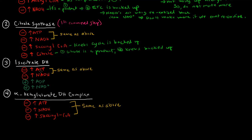Isocitrate dehydrogenase is also inhibited by high levels of ATP and high levels of NADH, for the very same reason as the PDH complex before it — they indicate high energy levels and backup of the ETC, so you don't want to keep making more. However, this enzyme also has activators: high amounts of ADP and high amounts of NAD+. High ADP indicates that ATPs have been used up, signaling low energy. If we have low energy, we want to activate the Krebs cycle so that we can make more — so ADP is an activator.